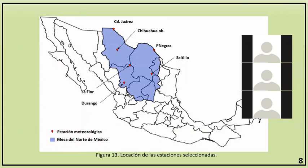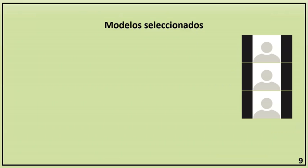De cada estación se obtuvieron los registros de datos en el periodo del 25 de marzo al 23 de junio. Los registros contienen información meteorológica de diversos parámetros, entre los que se encuentran la radiación solar, la humedad relativa y la temperatura del aire, utilizados para la estimación de la radiación PAR. Los valores máximos de radiación PAR se obtienen alrededor del mediodía, mientras que los mínimos son obtenidos al ocaso.